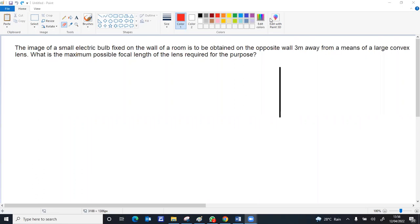As per this question, a small electric bulb is fixed on a wall. The opposite wall is 3 meters away, and an image is to be obtained on that opposite wall. What should be the maximum focal length of the convex lens that can be used for this purpose?